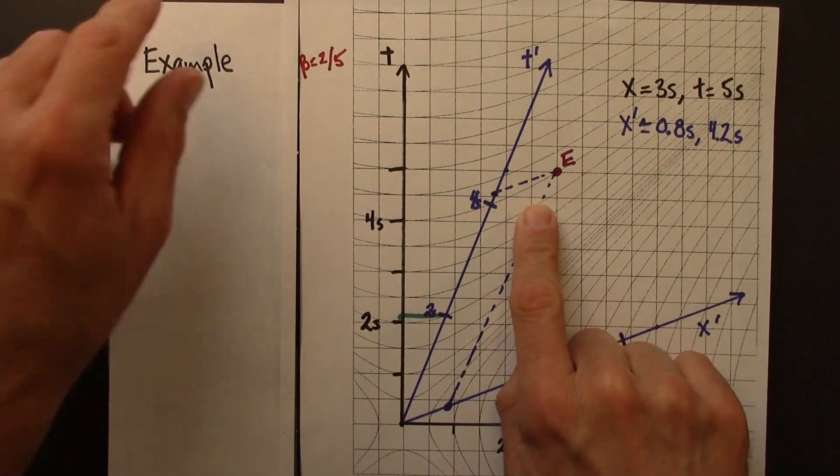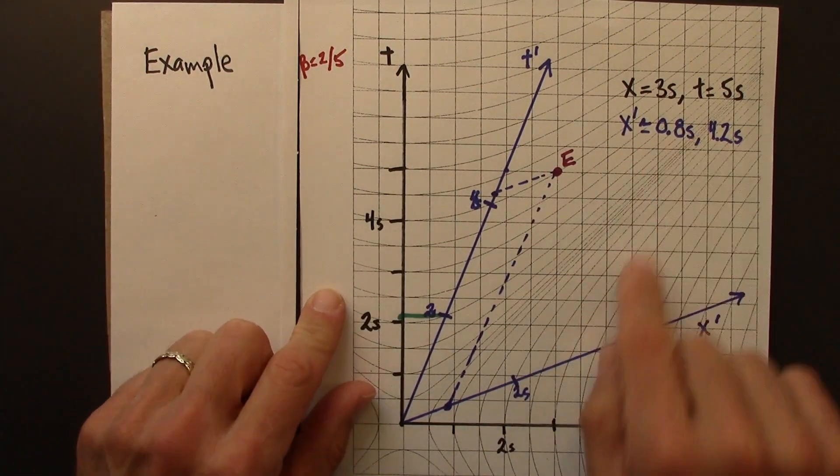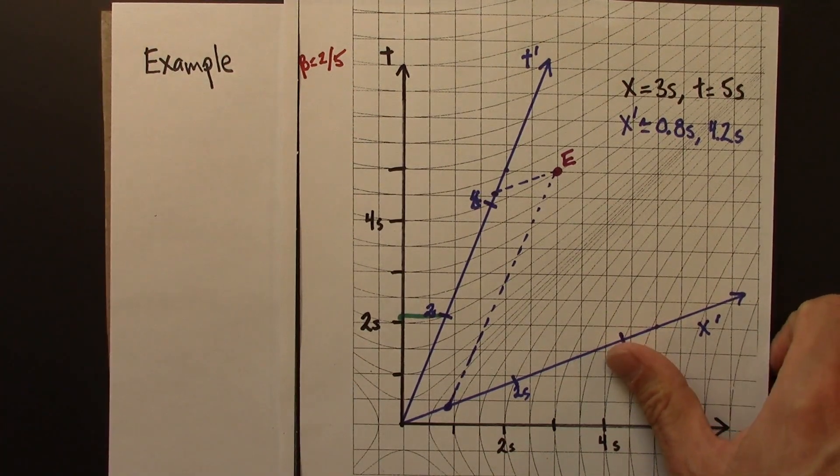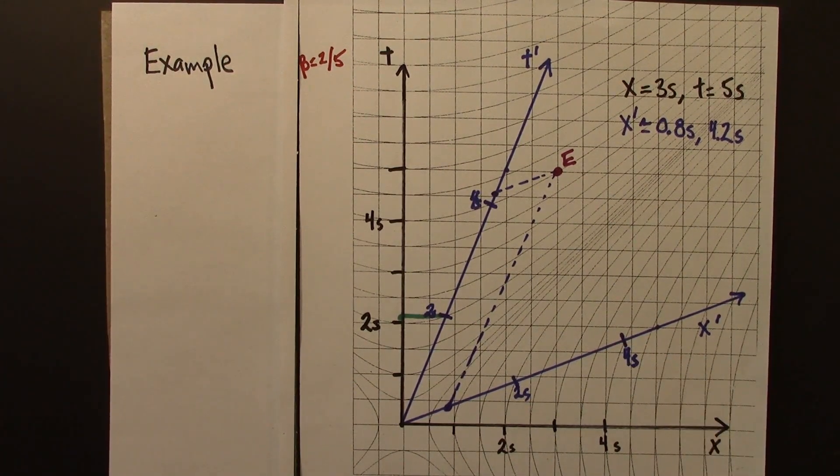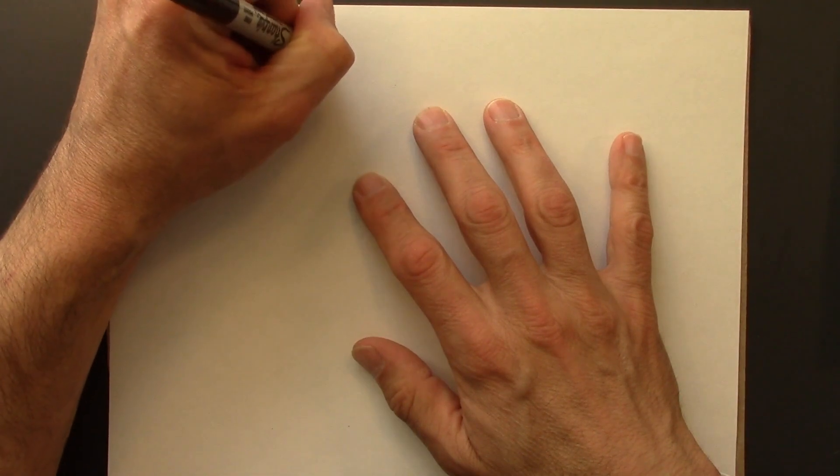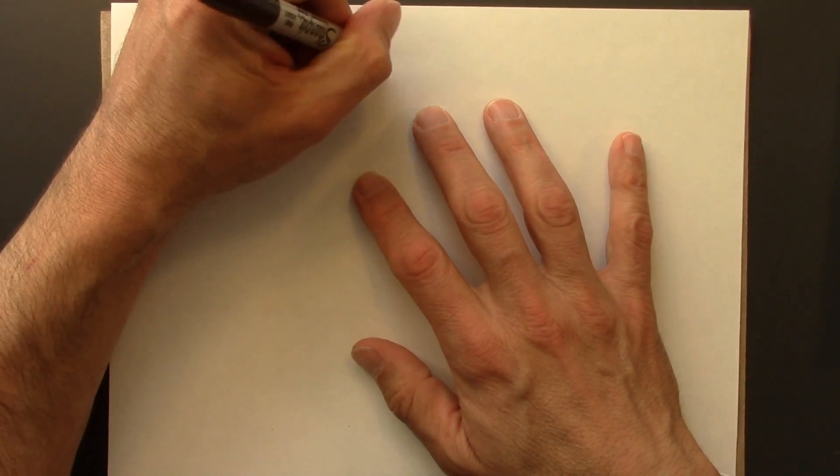Let's use algebra, the Lorentz transformations, to see if we can get numbers that are pretty close. In this example, we have a beta of two-fifths.